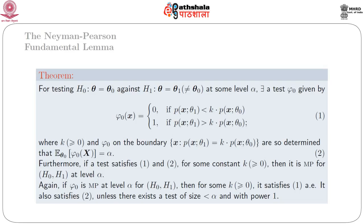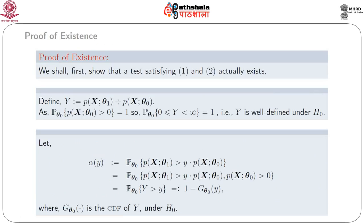First we give the proof of the theorem in terms of its existence part, and then give its sufficient part; the other part will contain the necessary part. For the existence part, we first define a random variable Y = p(x|theta_1) / p(x|theta_0). Actually, p(x|theta_0) may equal 0 for some values of x, but the set where p(x|theta_0) > 0 has probability measure under theta_0 equal to 1.